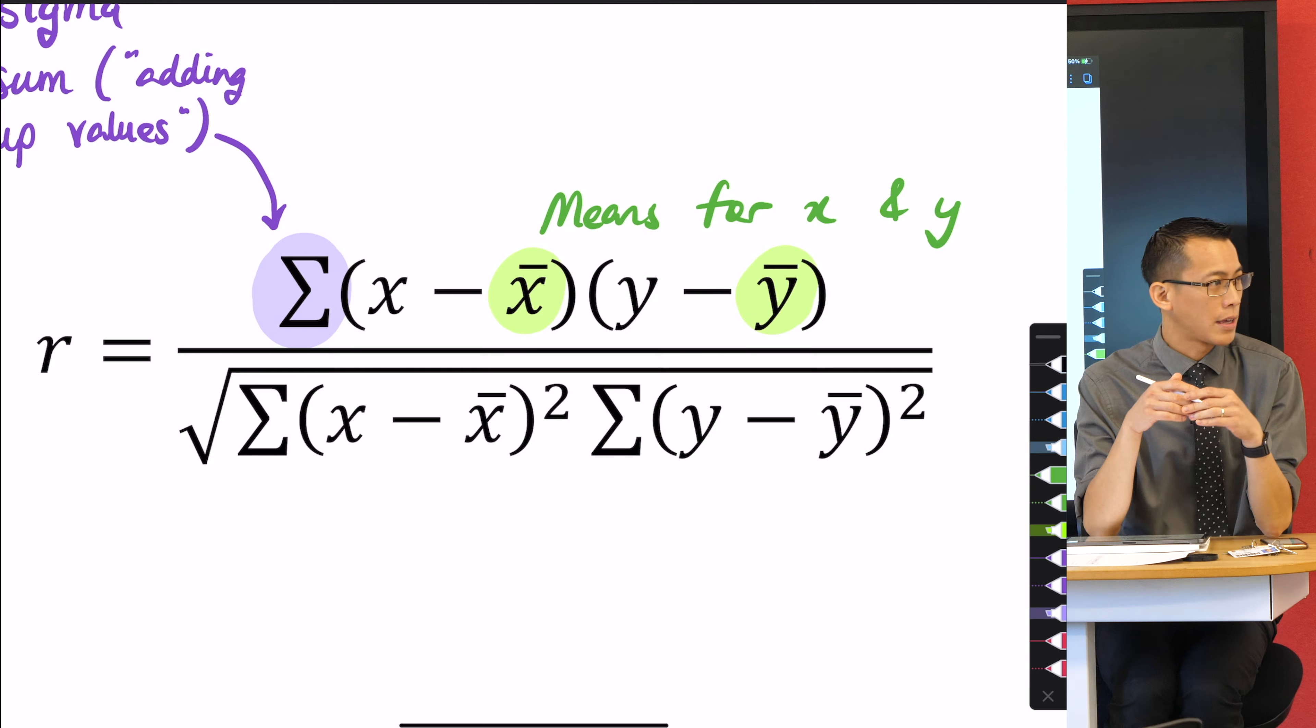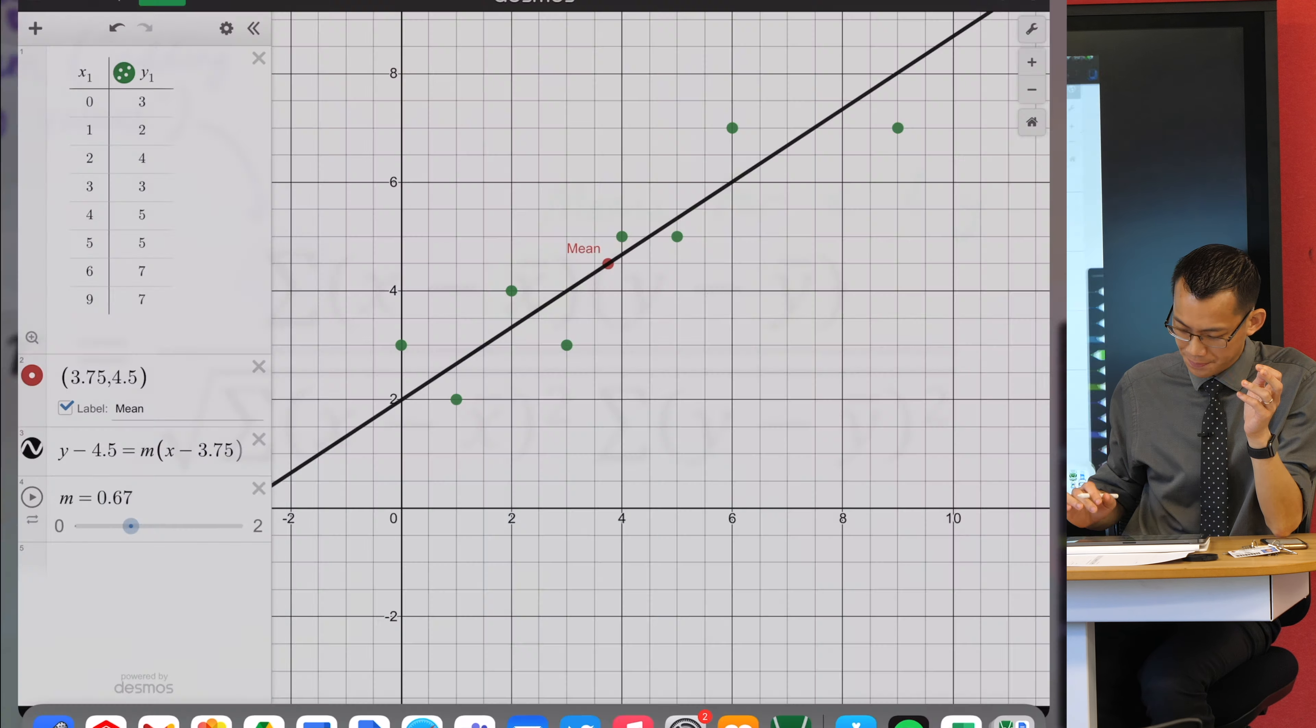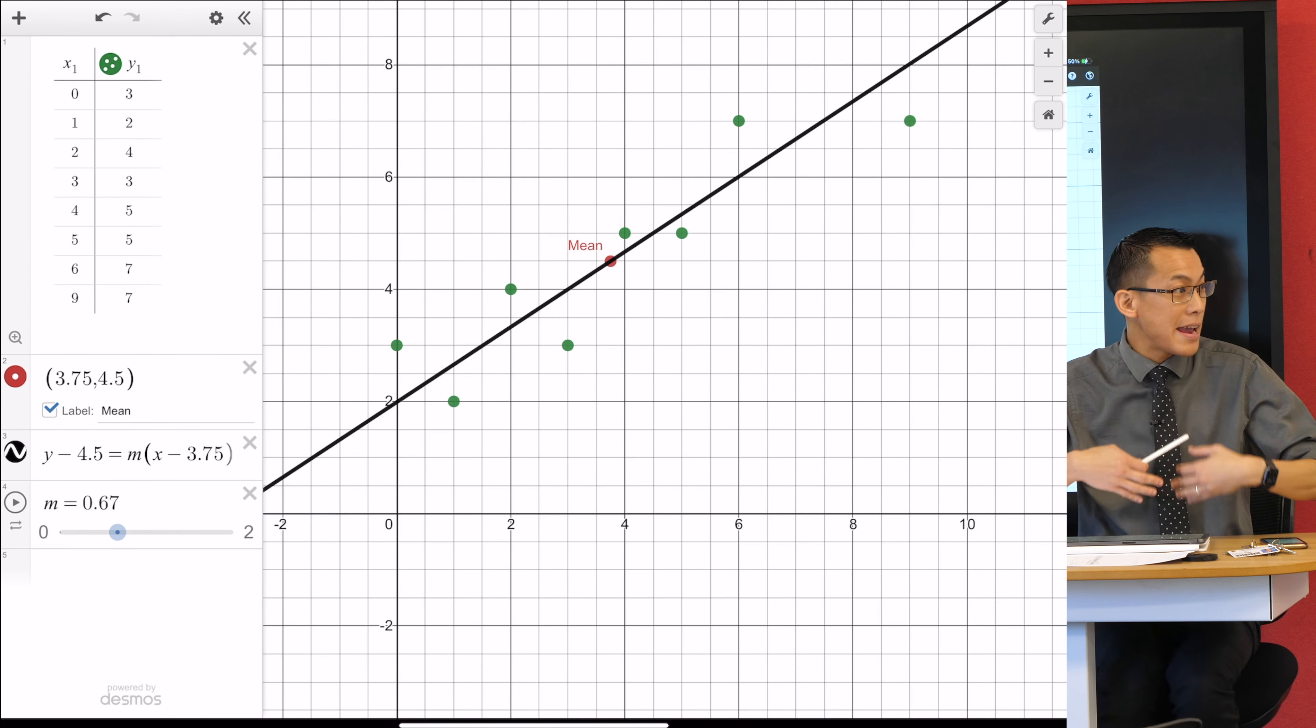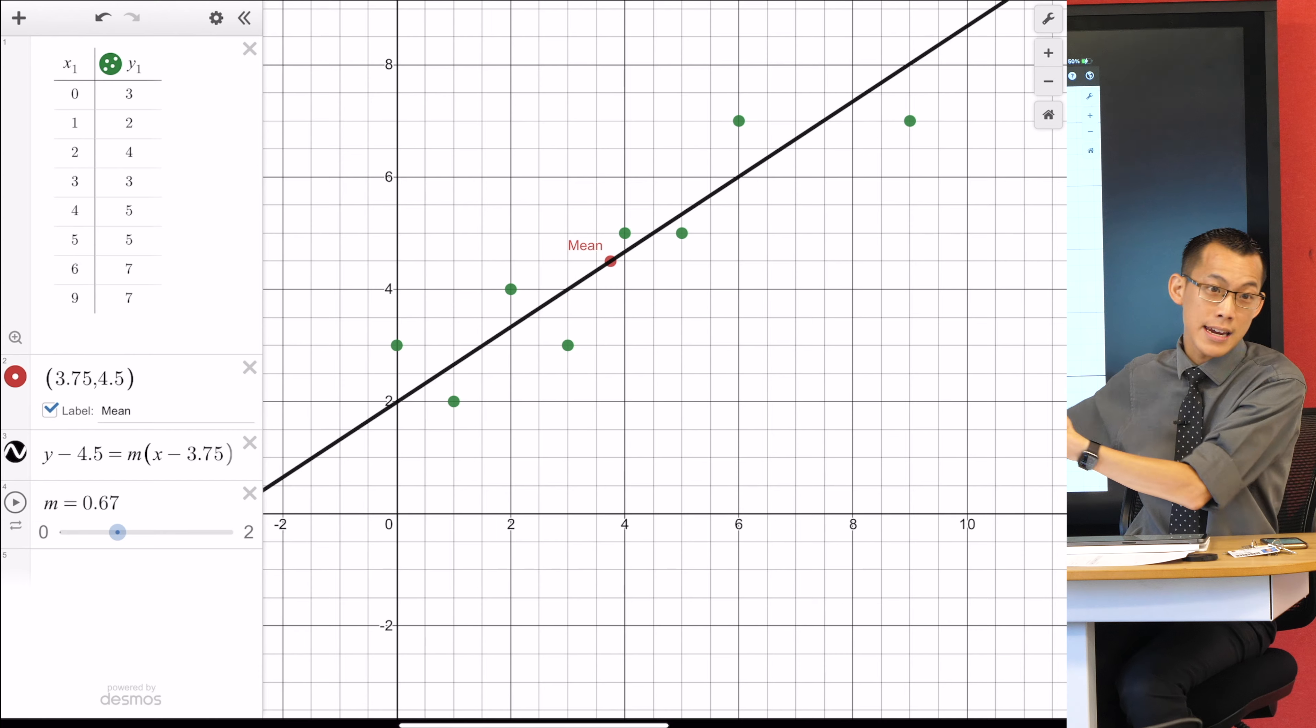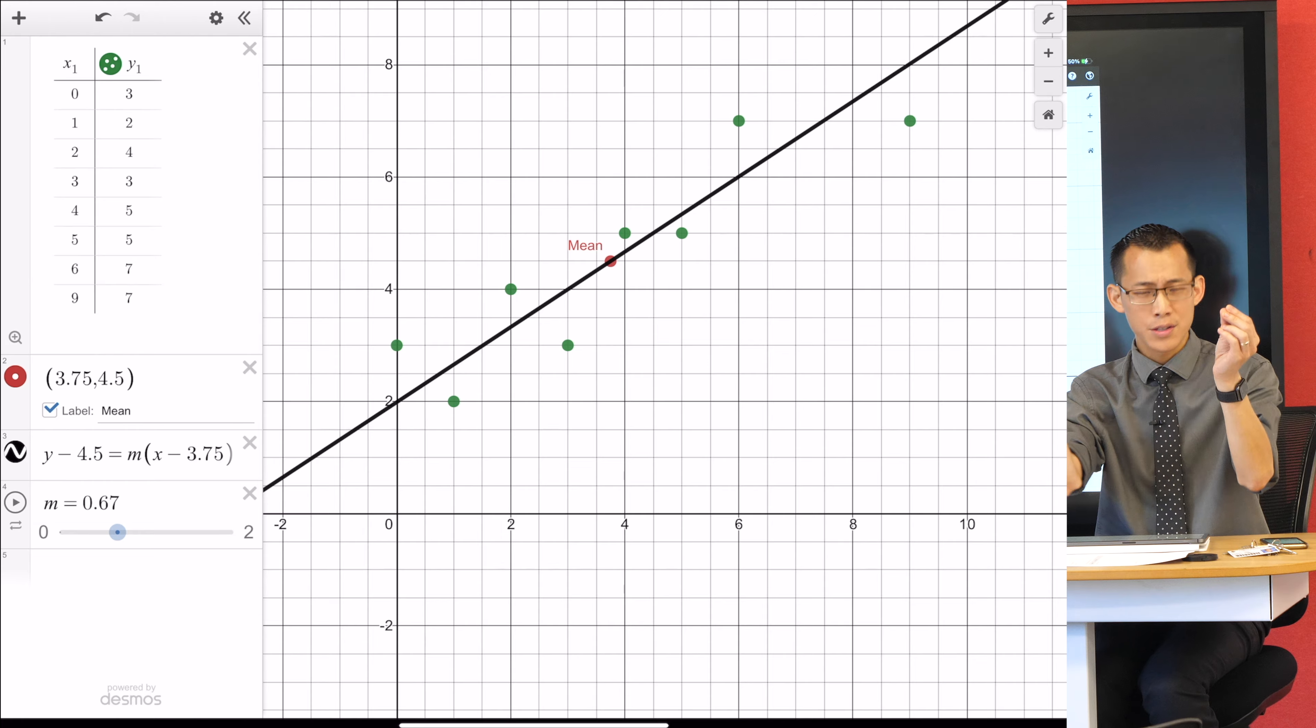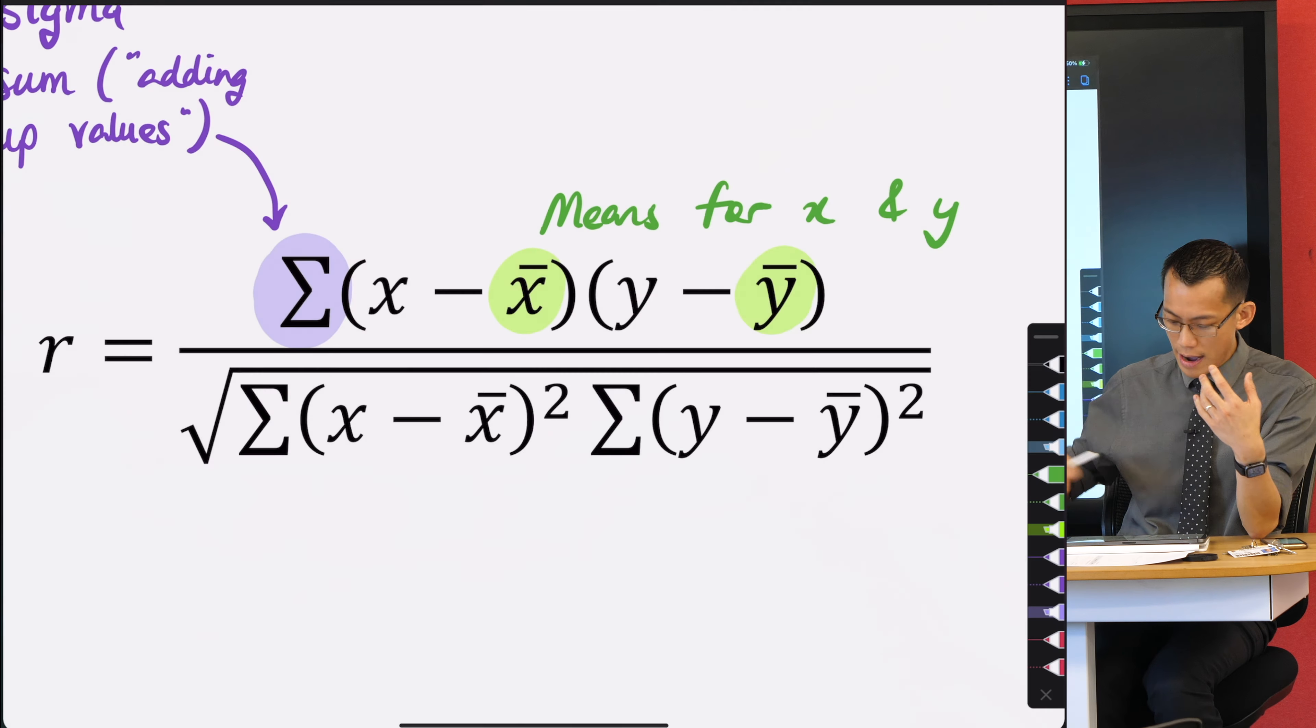Let's go ahead and write that down. These are the means for your two different variables. In this case we're just generically calling them x and y. You've got the means here, and then you have an x and a y that has nothing to do with the mean.